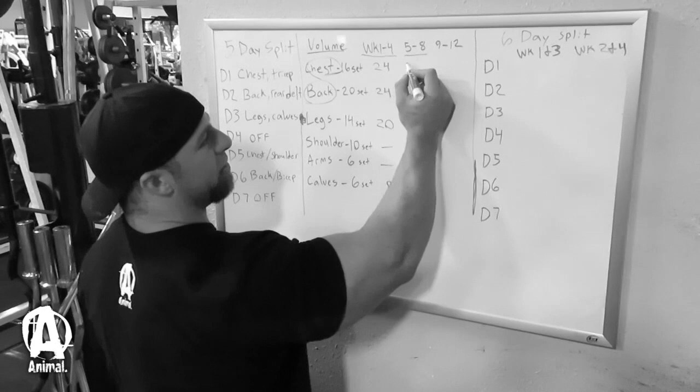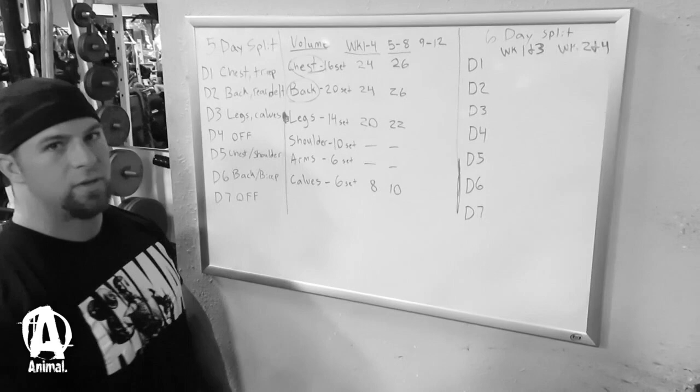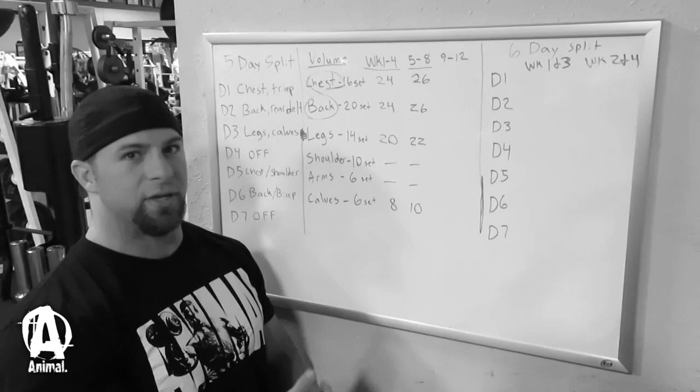Then for week five through eight, once we've started acclimating to that volume, we can increase a little bit further. We're going to go 26 sets, 26 sets, 22. We're going to still keep this the same, and then 10 sets. So we're gradually increasing volume, and still throughout this, we're trying to increase weight and reps as we can.